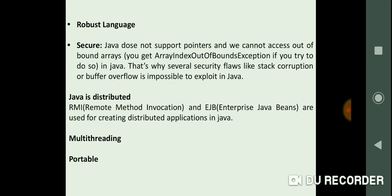The next is Java is distributed language. There are some distributed applications like RMI and EJB which are used for creating distributed applications in Java. The next thing is multi-threading which allows concurrent execution of two or more parts of the program for maximum utilization of CPU, which is one of the features of Java.